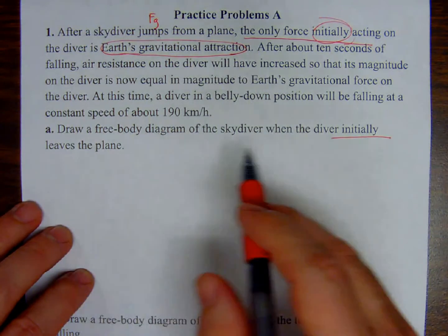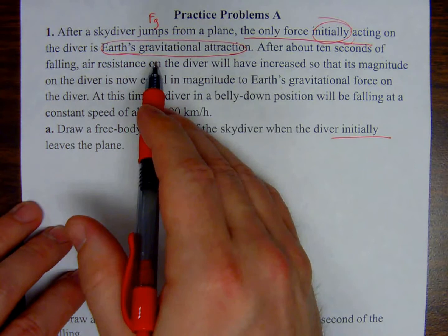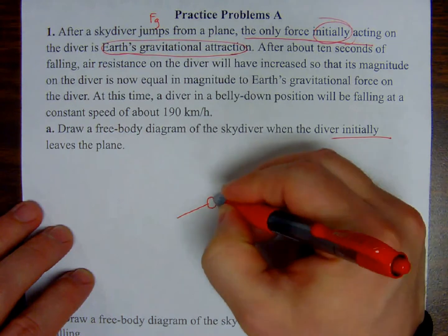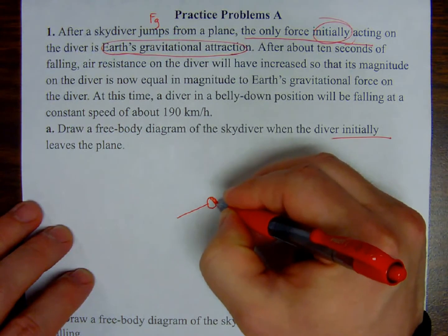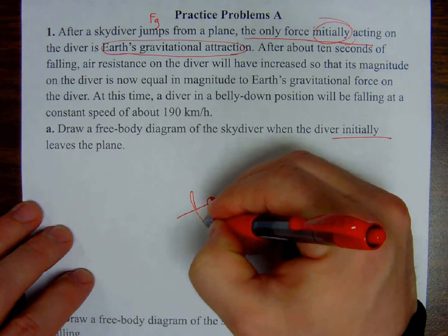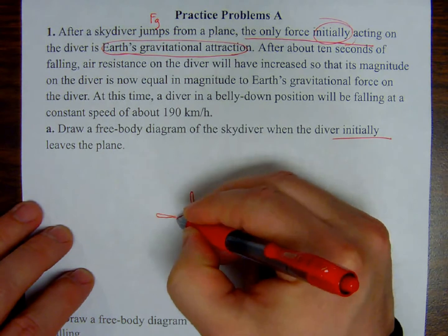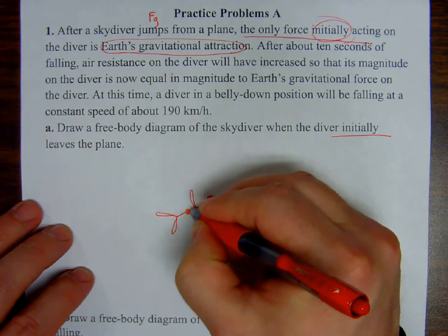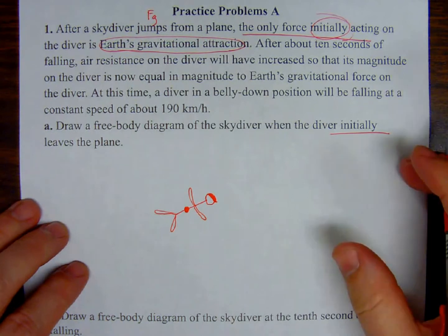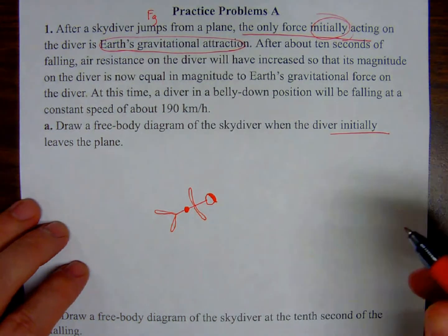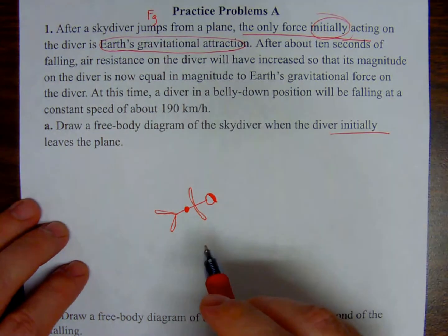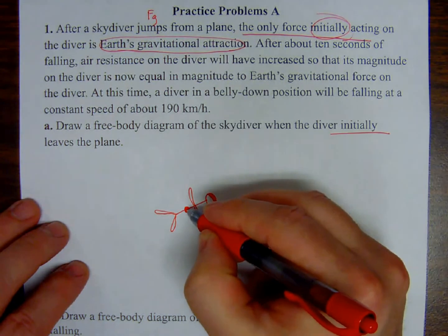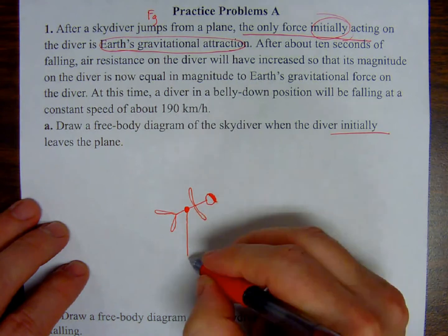So let's draw our diver. Okay, make sure he's wearing a helmet. Want to be safe. Draw a couple arms. There we go. And so we're going to need to identify the center of mass because the free body diagrams, we're at the basic level. We're assuming that forces are operating only on the center of mass. This makes learning the concepts a little bit easier. And again, we're told by the question that the only force initially acting on the diver is Earth's gravitational force. So when we're talking about the diver initially leaving the plane, we only have one arrow here because we only have one force. And it is the force of gravity. So F sub G. And that's it. That's all we know.